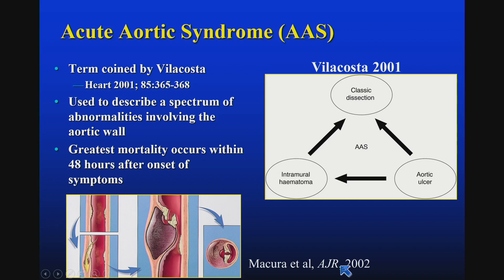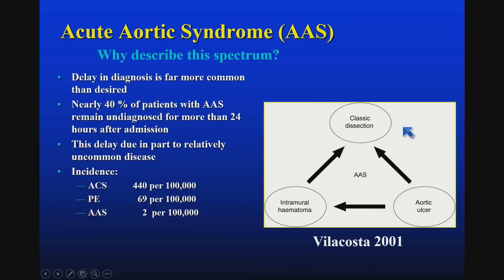The thinking about aortic dissection has evolved quite a bit over the many years since that time. Now we like to think about these syndromes as the acute aortic syndrome, a term coined by Villa Costa in 2001. It is used to describe a spectrum of abnormalities, all involving the aortic wall tearing, rupturing, or fissuring, which is associated with a very high degree of mortality in the early phases. In this paradigm, classic dissection, intramural hematoma, and aortic ulceration are all considered a spectrum of disease.